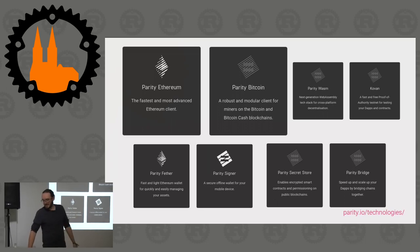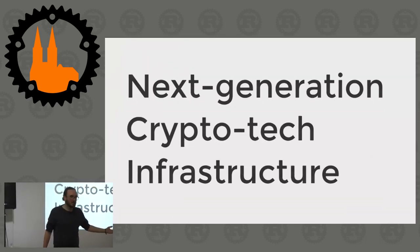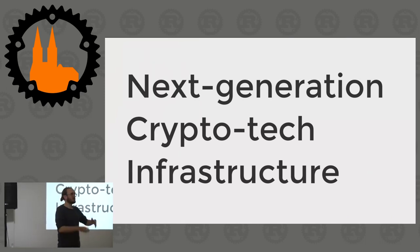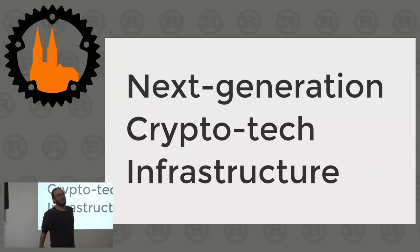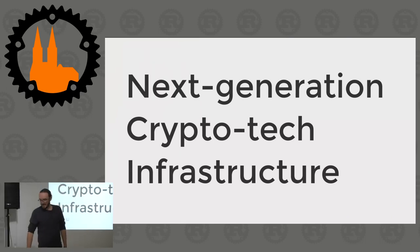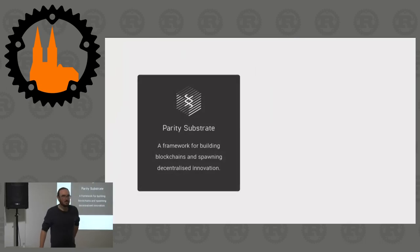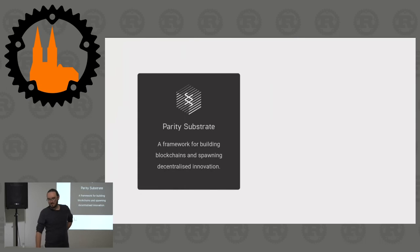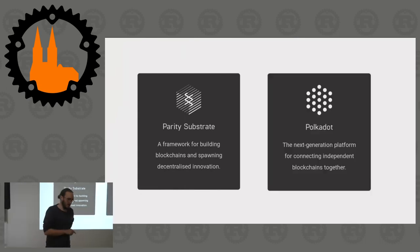There's also the Coven, which is a second-generation network. In general, what we do is we build next-generation crypto infrastructure, because we can and it's fun. Today I would like to talk to you about our new project, which is Parity Substrate, which we started building because of Polkadot.